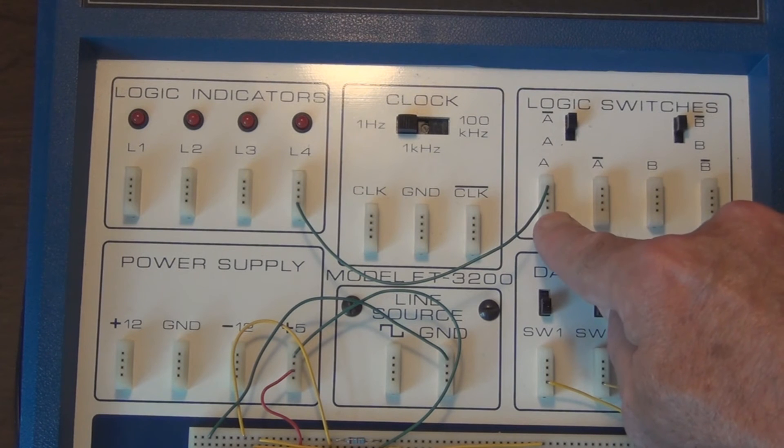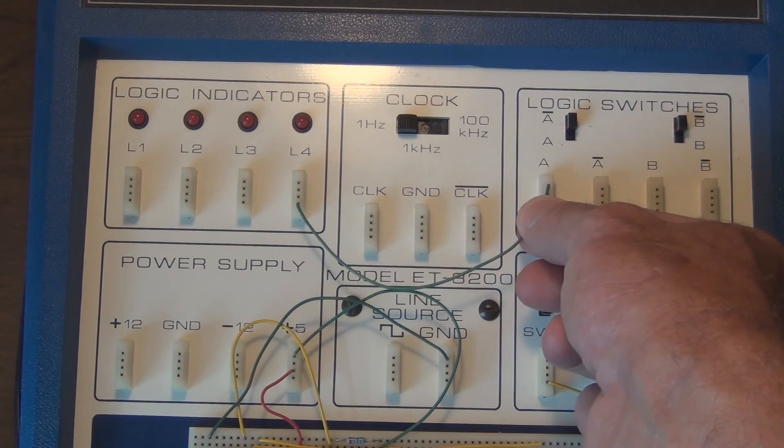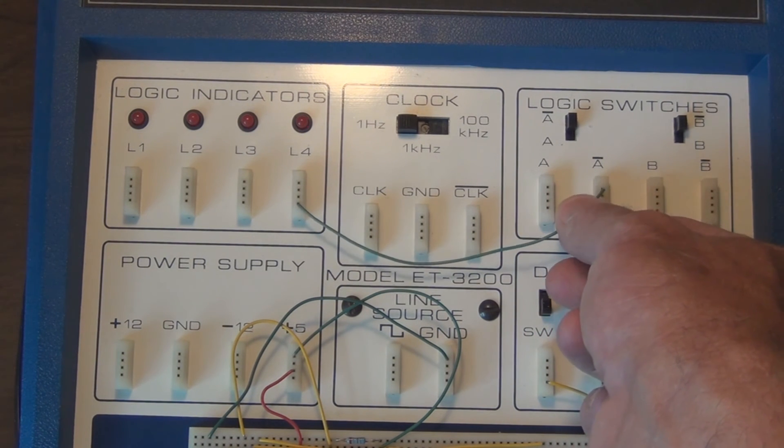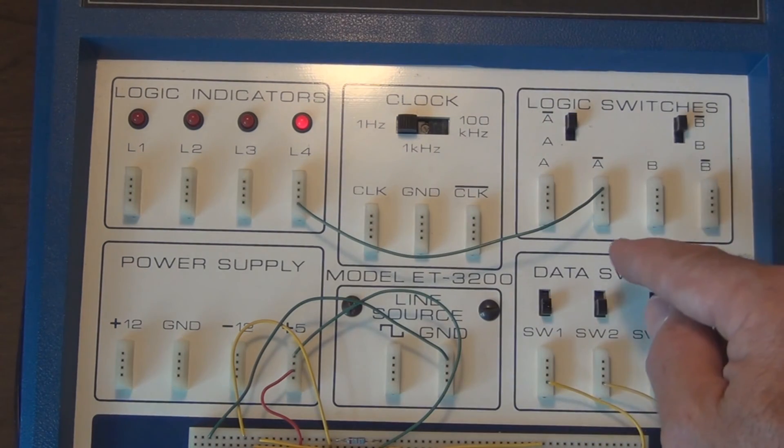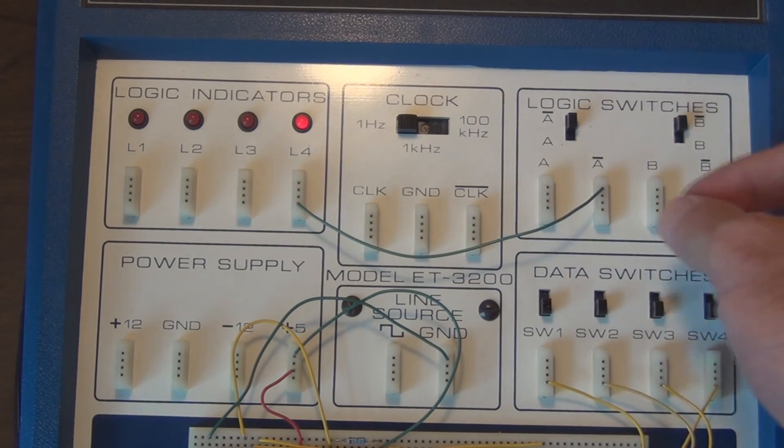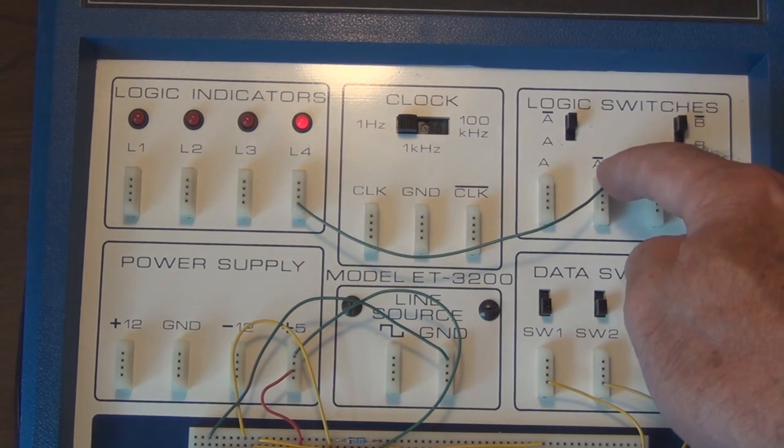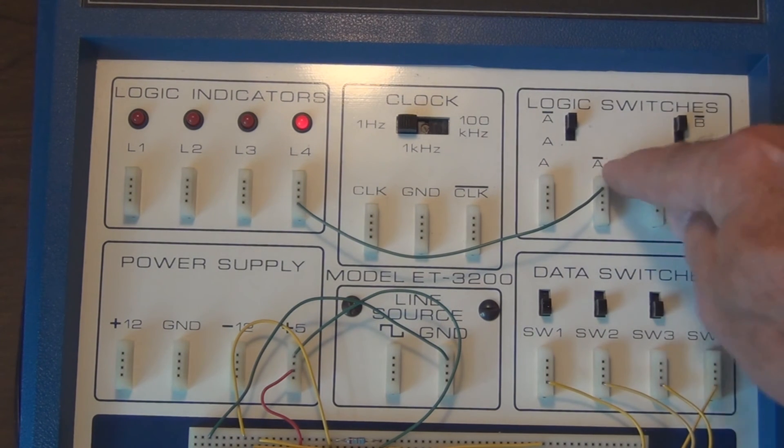When A is normally zero or low, the A-not will be the opposite—it'll be high, so it'll light up the LED. So we get A and A-not, where this line above the letter A and B indicates the term A-not and B-not.